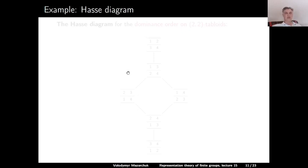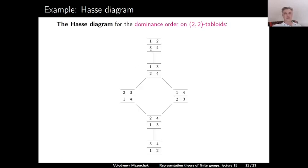Here is a more general example — the Hasse diagram for the dominance order on all (2,2)-tabloids. The maximum element is [1,2 | 3,4]. Below it is [1,3 | 2,4], which we just saw is dominated by [1,2 | 3,4]. On the next layer we have two incomparable elements: [2,3 | 1,4] and [1,4 | 2,3], both smaller than [1,3 | 2,4]. Then there is [2,4 | 1,3], smaller than the previous two. The minimum element is [3,4 | 1,2].